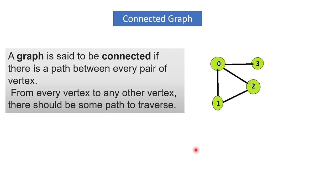Next, what is a connected graph? A graph is said to be connected if there is a path between every pair of vertices — from every vertex to any other vertex there should be some path to traverse. Each and every node is connected, meaning if I wish to go from one node to another node there should always be one path present. For example, from two to three — obviously a path is there: two to zero, then zero to three. Or from three to one: three to zero, then zero to one. So there is always a root present between each and every node — that is known as a connected graph.